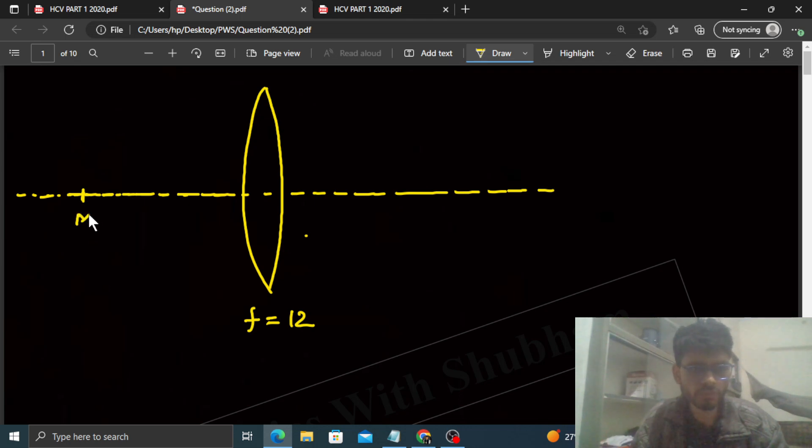A particle performs SHM along the principal axis. The mean position of the SHM is at a distance of 20 centimeter. And the amplitude of oscillation is 1 centimeter. So from mean position, 1 centimeter here and 1 centimeter on the other side - these are your extreme positions. Let's say this is extreme position A and this is extreme position B.